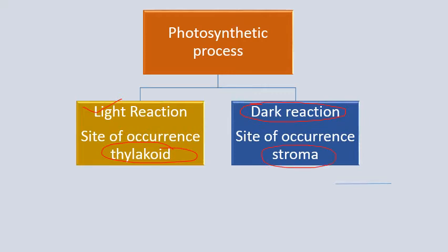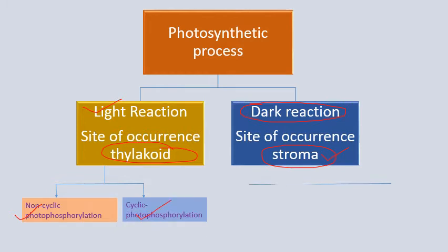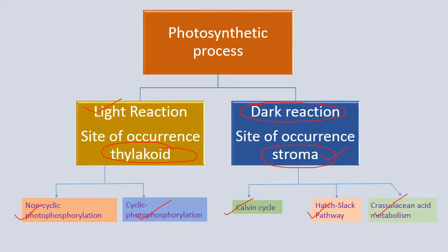The light-independent or dark reaction occurs in the stroma, where enzymes are present. In the light reaction, we discuss two things: non-cyclic photophosphorylation, called the Z-scheme, and cyclic photophosphorylation. In the dark reaction, we discuss the Calvin cycle (C3 cycle), C4 cycle (Hatch and Slack Pathway), and Crassulacean Acid Metabolism.